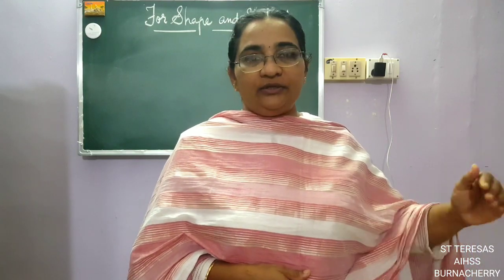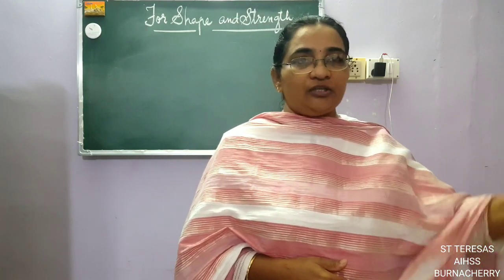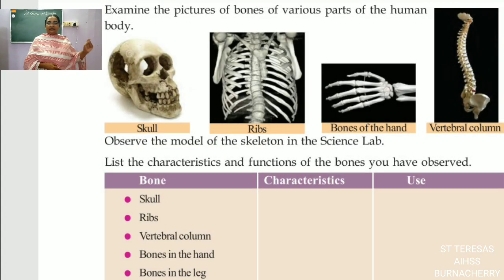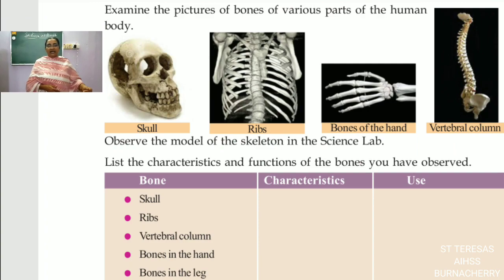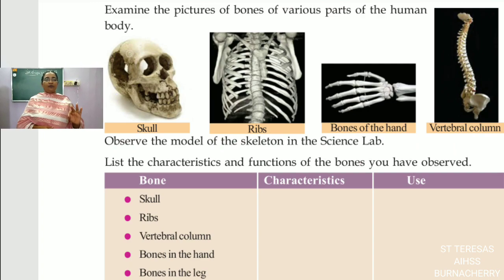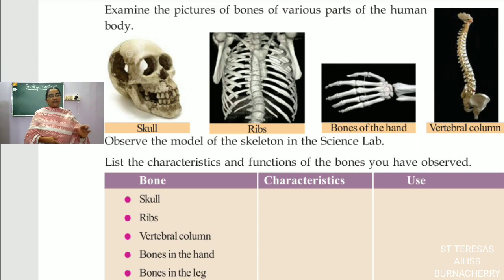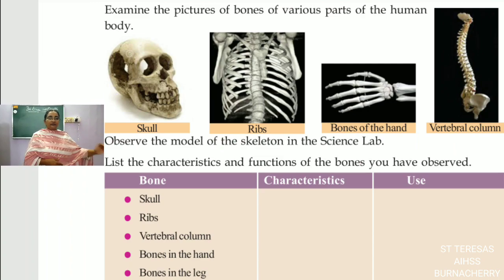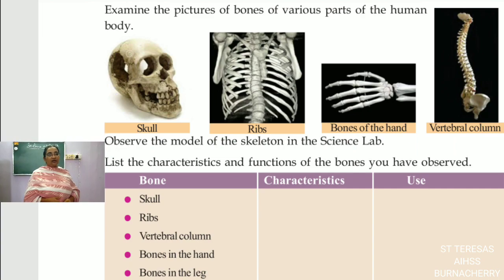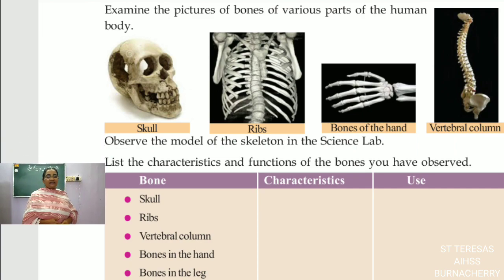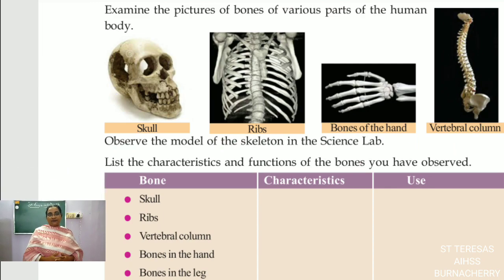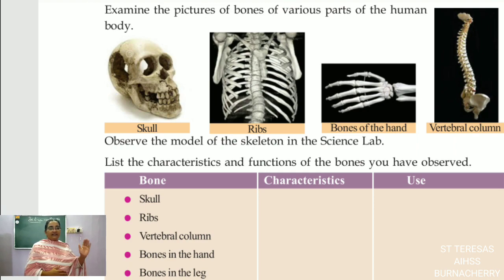So now we saw the different types of bones in our skeletal system: the skull, the rib cage, the vertebral column, the bones of the hand, the bones of the leg, and inside the ear the very small stapes bone. Draw the table in your notebook and write down the characteristics and uses of each bone. Look into the passage in the box and complete this table.